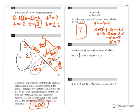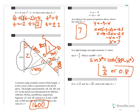Free response Question 19: In a right triangle, one angle measures x degrees where sine of x degrees equals 4/5. What is cosine of (90 degrees minus x degrees)? This is a co-function identity problem. The identity states that sine of x equals cosine of (90 minus x). Therefore, cosine of (90 degrees minus x degrees) equals 4/5.